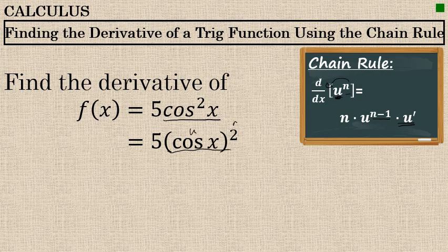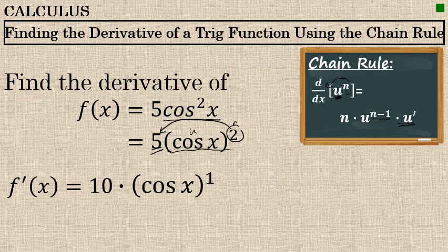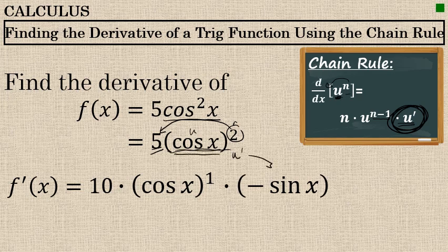We'll apply that here. Again, u is cosine of x and n is 2. First, we'll take the n to the front. Since there's a coefficient of 5, that stays — we'll multiply 2 times 5 to get 10. Then we'll copy down u, which is cosine of x, and decrease the power by 1, so the power of 2 gets decreased to 1. Then we multiply by the derivative of u. Since u is cosine of x, u prime is negative sine of x.